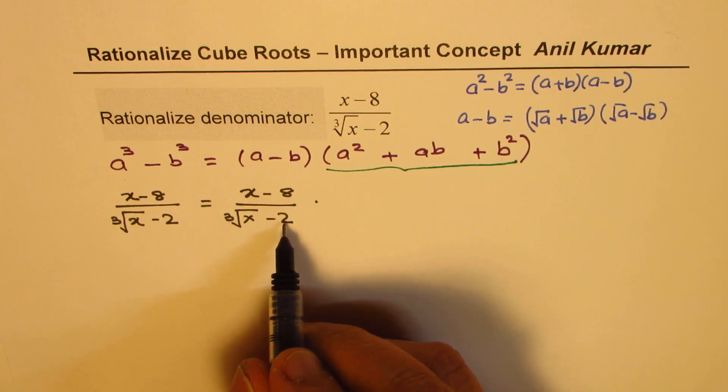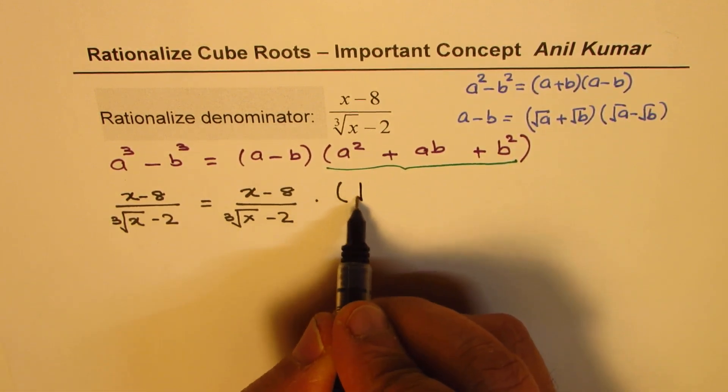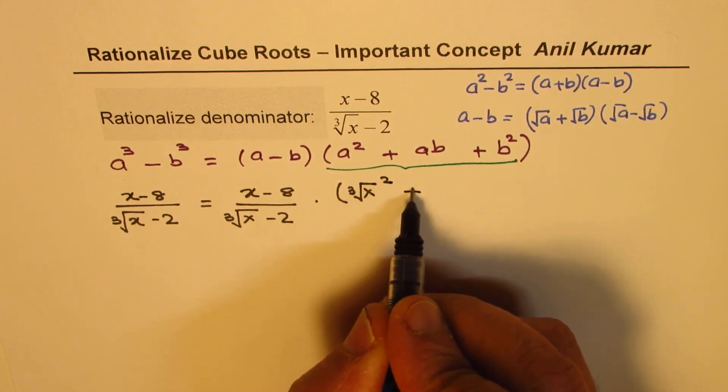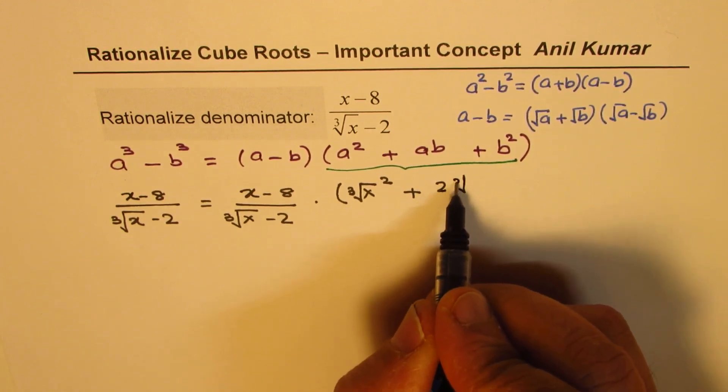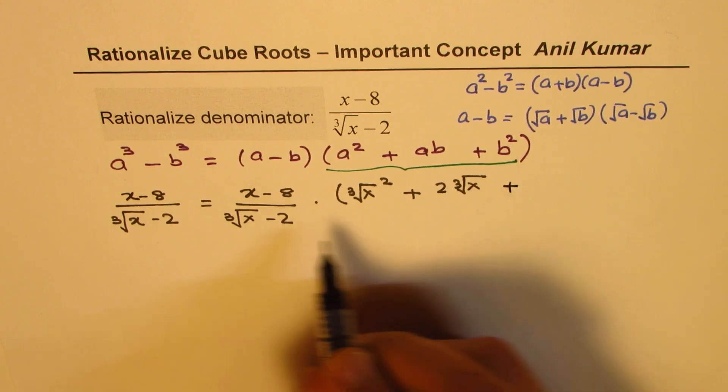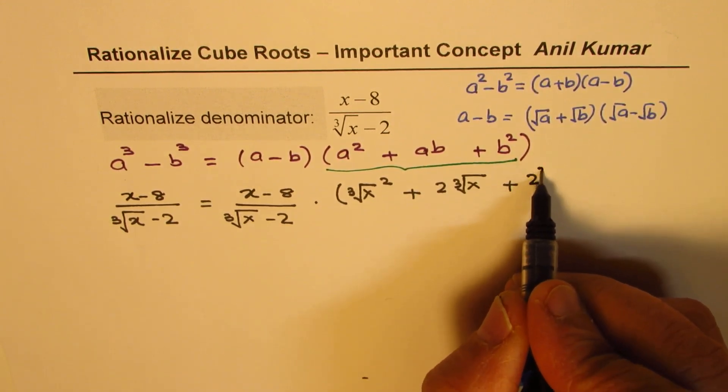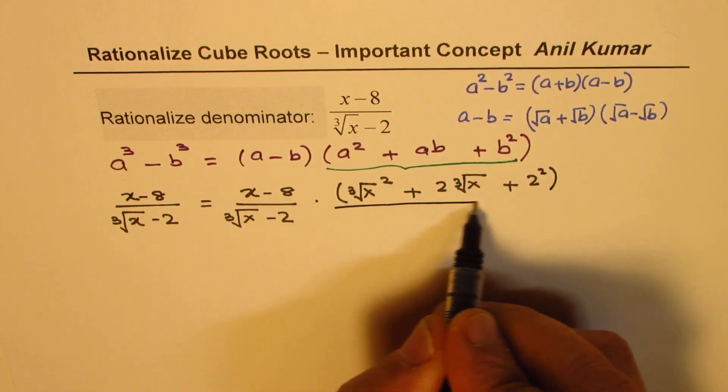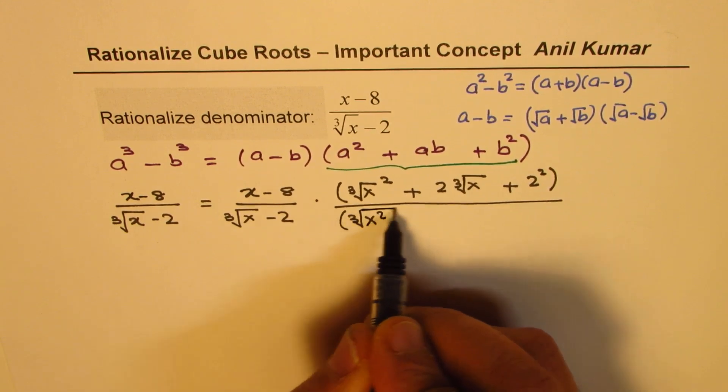Now, treat this as a and that as b. So, in that case, I should be multiplying this by square of this number, which is cube root x square, plus product of these two, which is 2 times cube root of x, plus square of 2, which is, I will write 2 square for the time being. So, this is the factor, which you need to multiply and divide with.